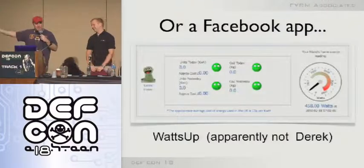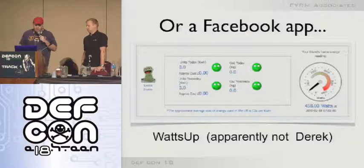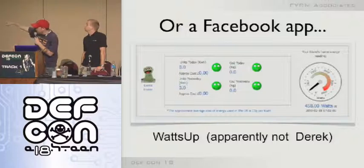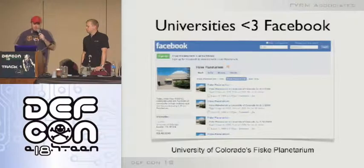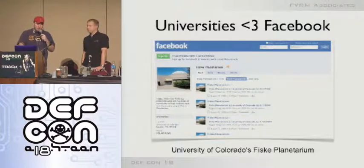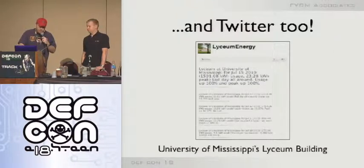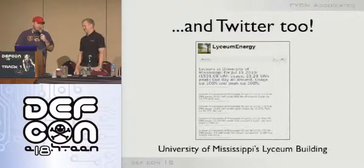So the next one: you can have a Facebook app that shows your energy usage. This one is called 'What's Up.' On the right side there, it says his current energy usage as of the date is 458 watts, but then it has all the breakdown information that's zero — so either the app is broken or he's not home. Universities love Facebook too. Why would you not want to post information about your building's energy usage? In three posts in a row it's like 'we had a bad day today' — obviously a script. And over on Twitter, the University of Mississippi says the same thing, which makes me think they may be using the same scripts.